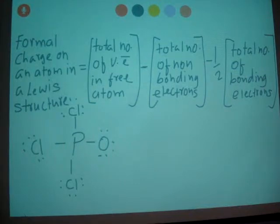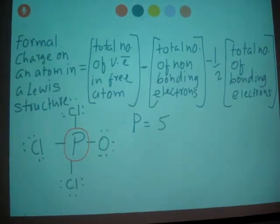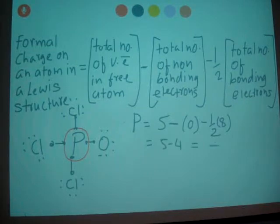So now let's calculate for phosphorus. Total number of valence electrons on phosphorus is 5 because it's in group 5, minus total number of non-bonding electrons. In here, there is 0, right? And then one half—on phosphorus bonding electrons, we have 1, 2, 3, 4, 5, 6, 7, and 8. So one half of 8. When you calculate 5 minus 4, that gets you plus 1.